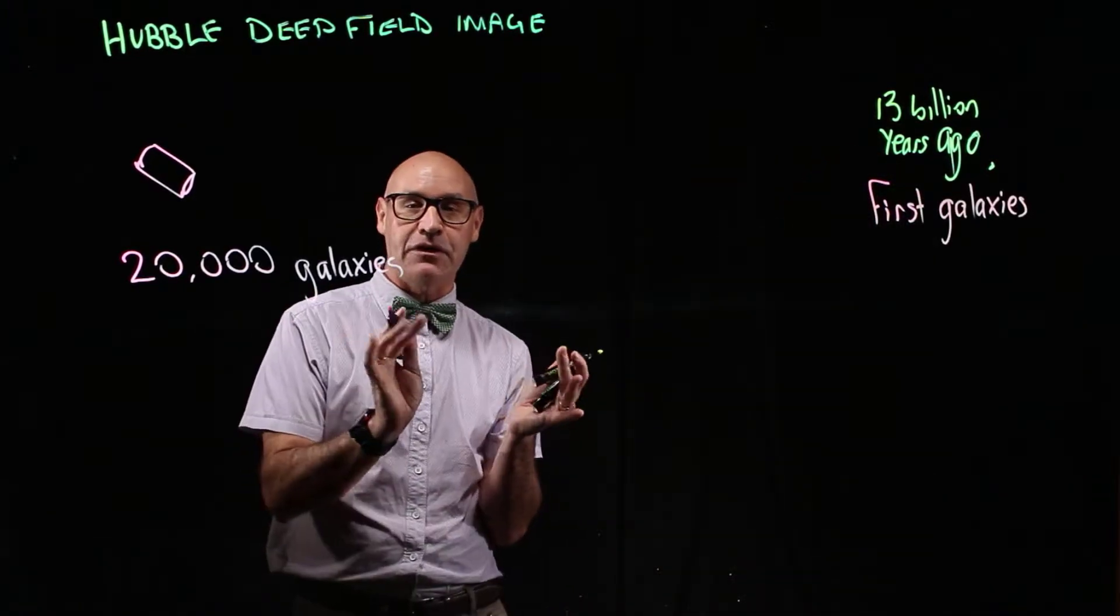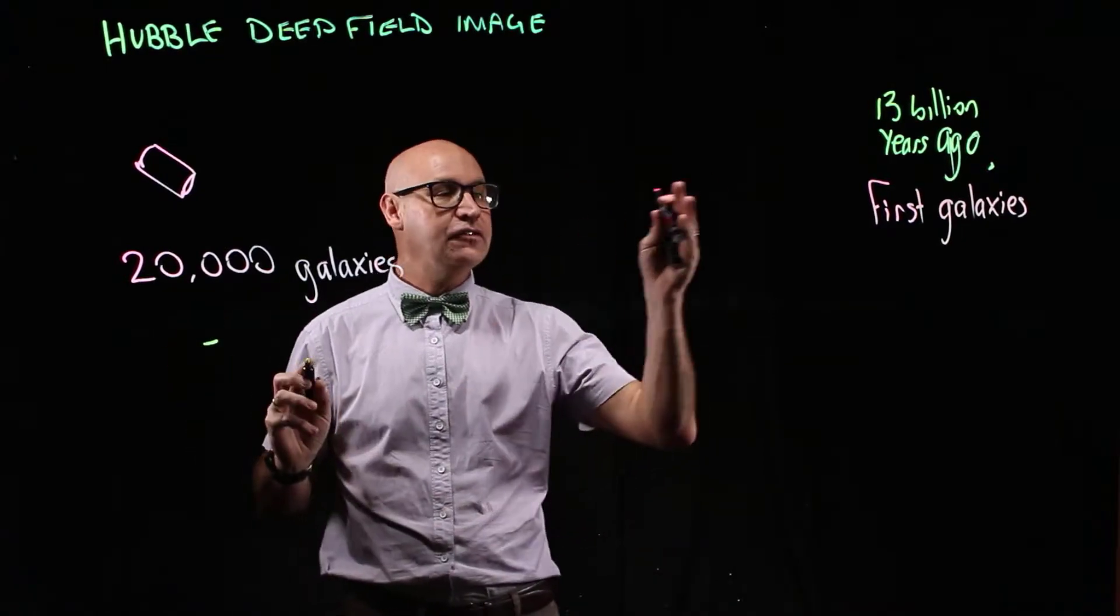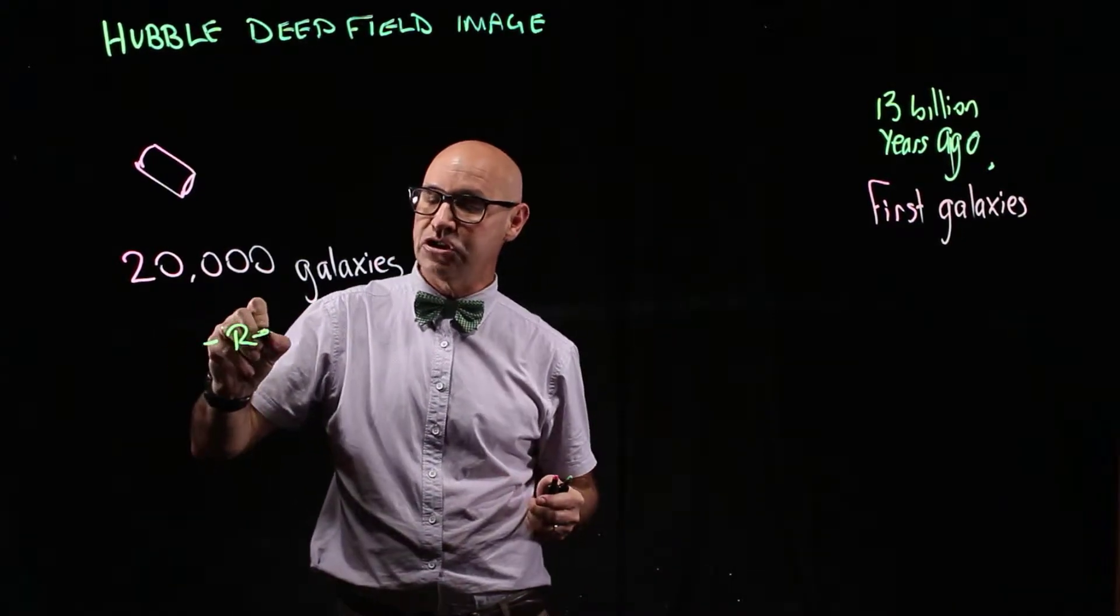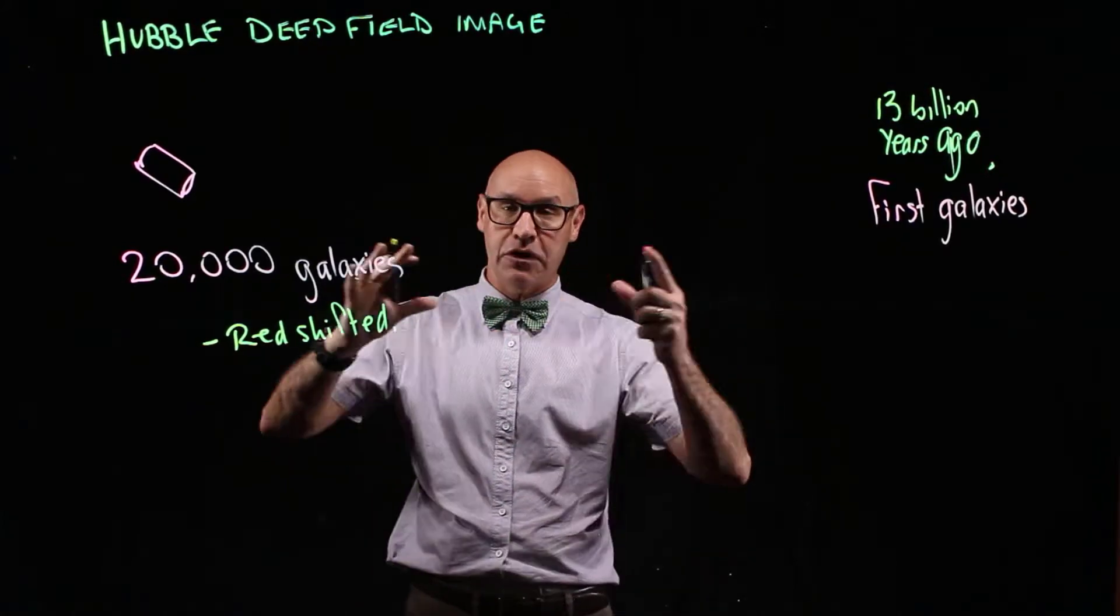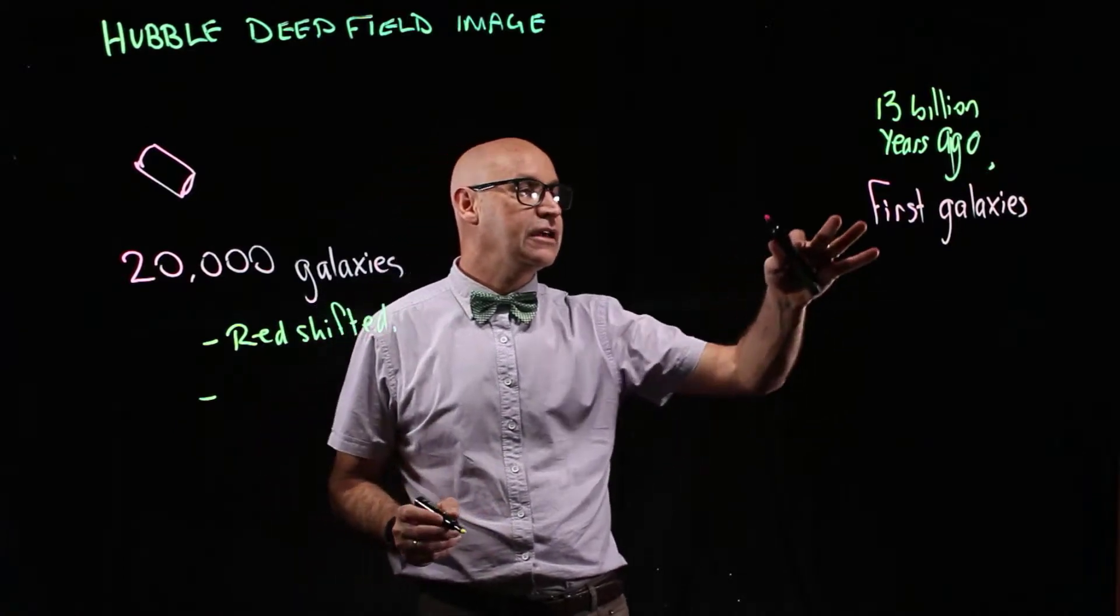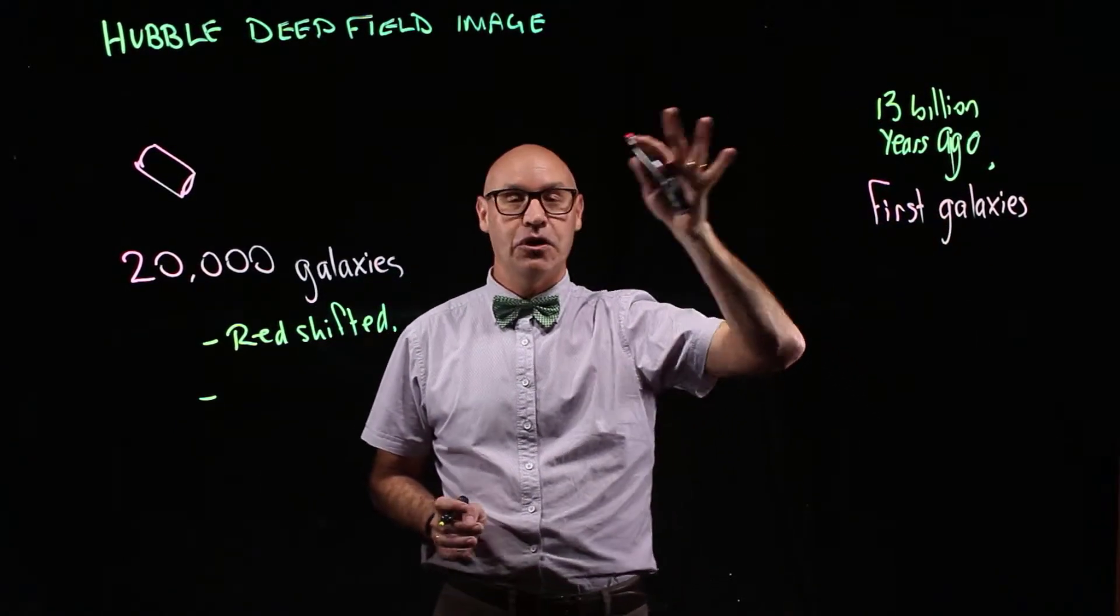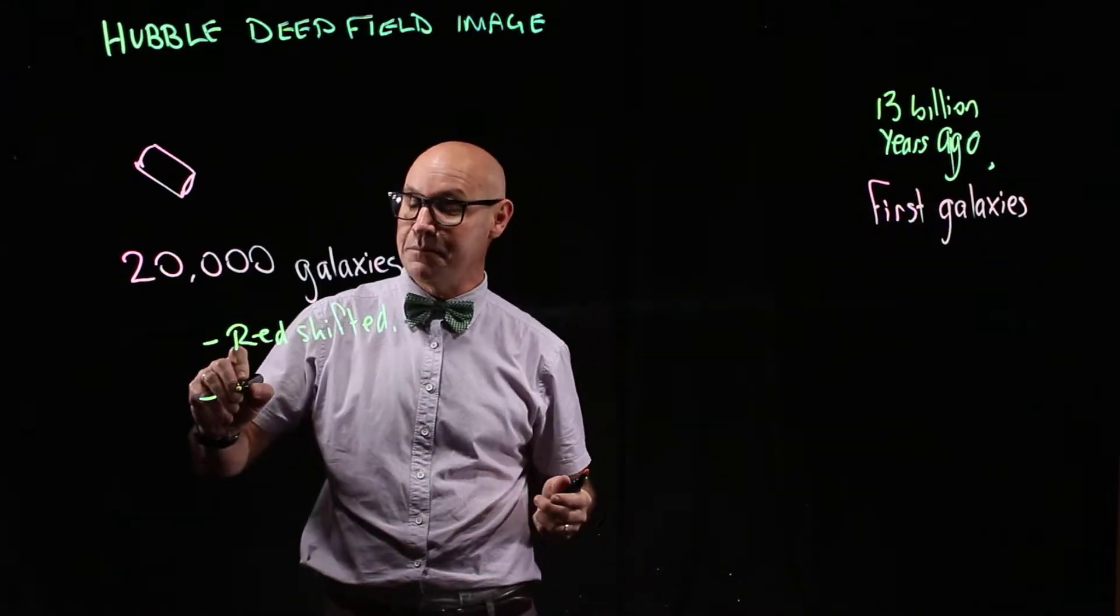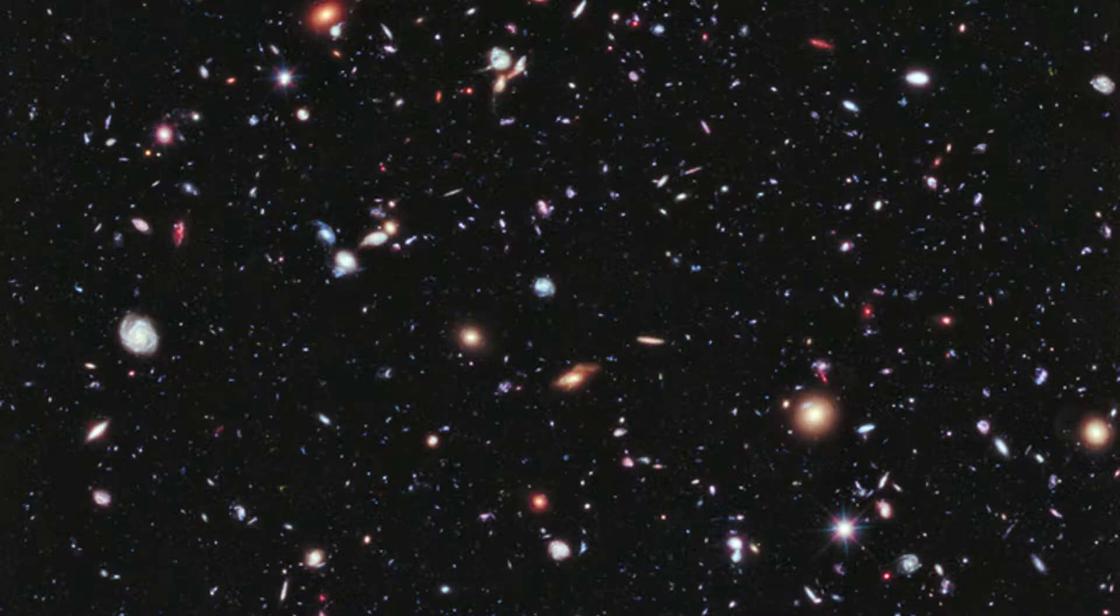So what was the evidence that this image was able to identify? Well firstly, the distant galaxies are redshifted, which supports the idea that the universe is expanding. It also identified that these first galaxies, the ones that are the furthest away, are the most immature. The galaxies are immature, they are irregular in shape, and they are very small.